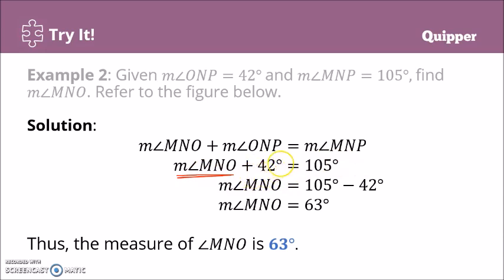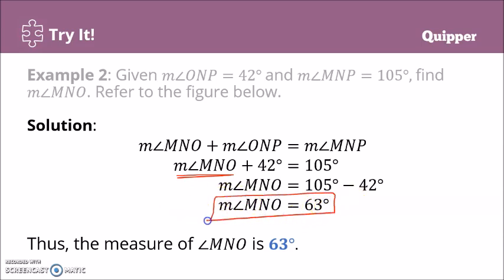Solving the equation, we move 42 to the other side: 105 minus 42 equals 63 degrees. Therefore, the measure of angle MNO is 63 degrees. Do not forget to write the degree symbol, since angles can also be measured using radians.